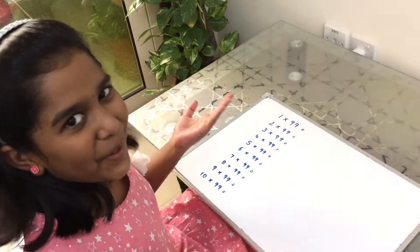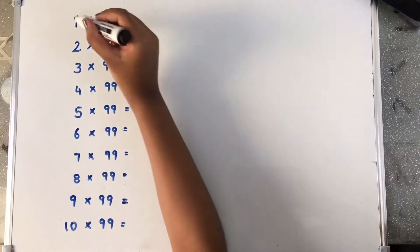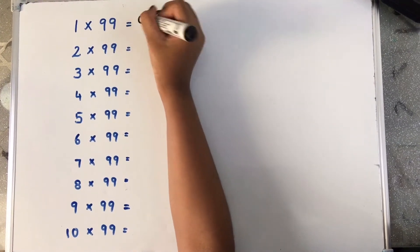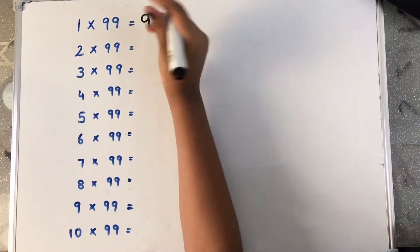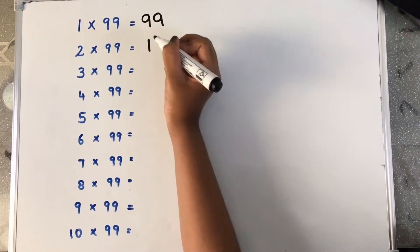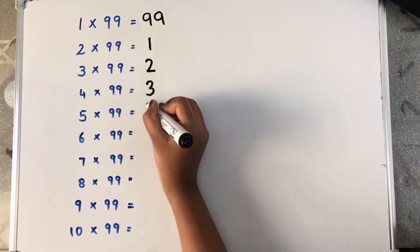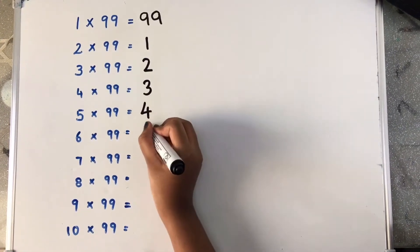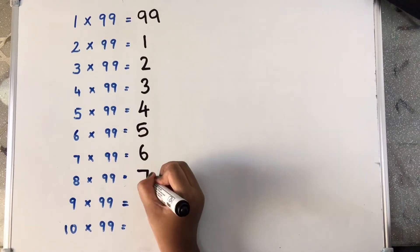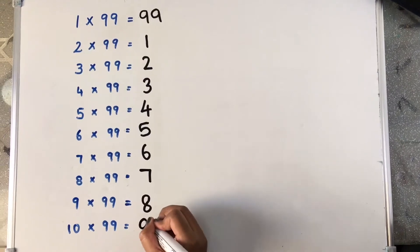Now, I am going to tell you the answers for the 99 table. So 19 × 99 equals 99. I am going to write it here. Now, we have to write numbers like 1, 2, 3, 4, 5, 6, 7, 8 and 9.